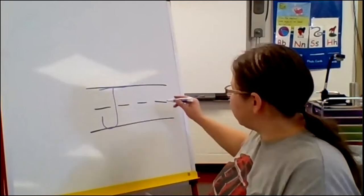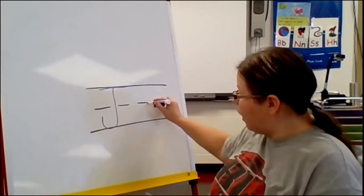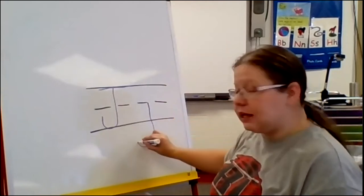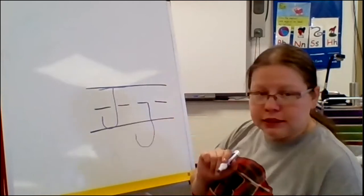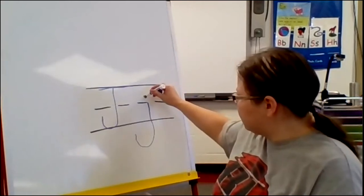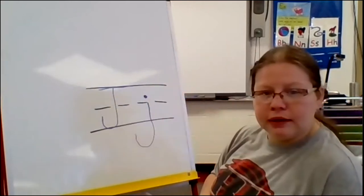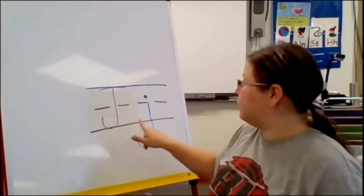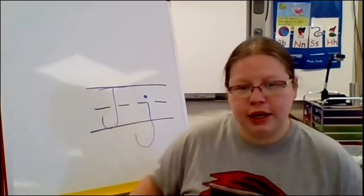My lowercase J, I'm going to start at the dotted line and he's going to go below the line like he's going fishing. His hook is under the water and then he gets a dot on the top. And that is how we write our uppercase J and our lowercase J.